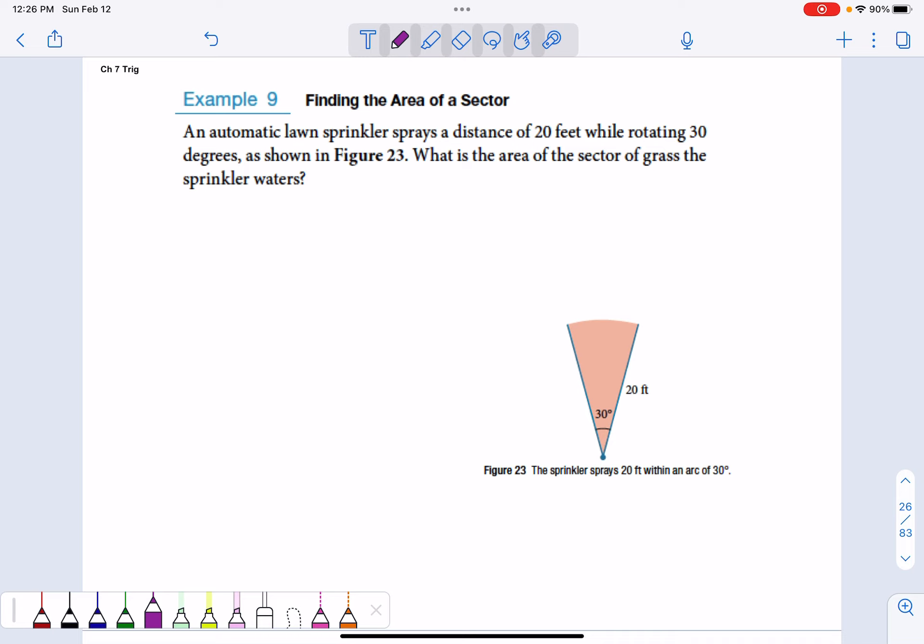Here, if we have a sprinkler that can sprinkle out a distance of 20 feet and it rotates 30 degrees, what is the area of the sector of grass that the sprinkler waters? Let's think about what we know. The area formula for a sector is one-half r squared theta. From the picture, we know r is 20 feet. We know theta currently is not in radians, so tack on a pi and put it over 180.